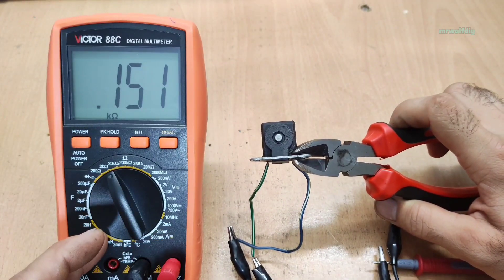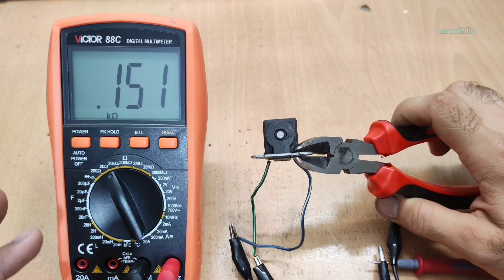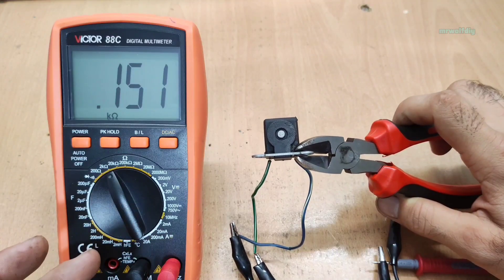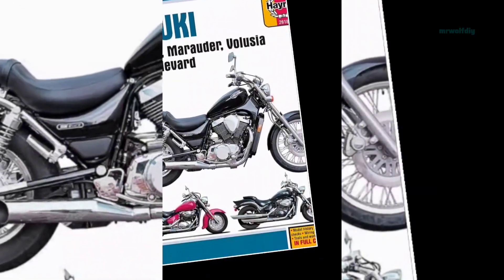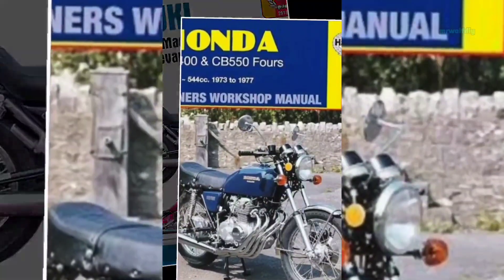To know the exact normal resistance range for your motorcycle pickup, you can check the service manual of your bike. You can find it online.